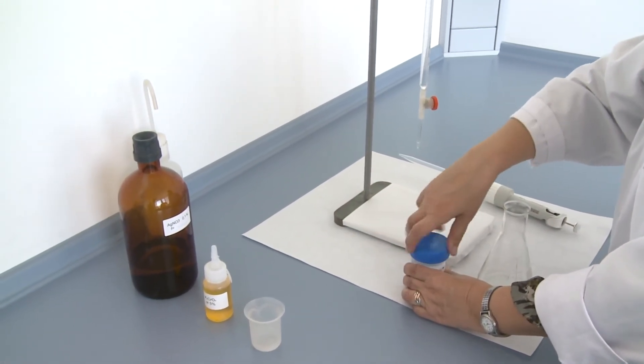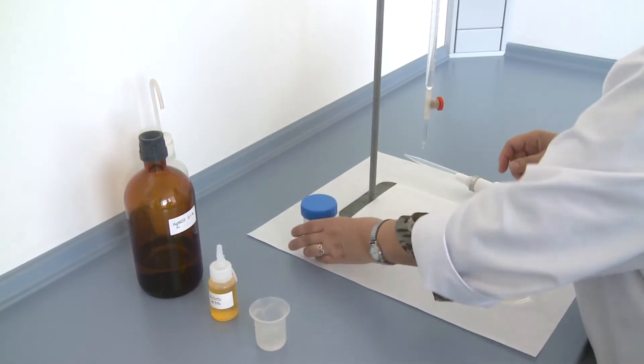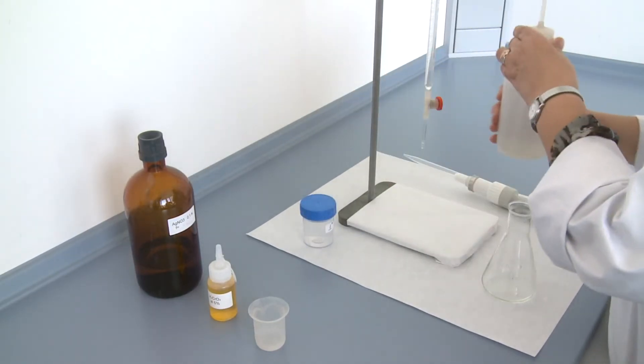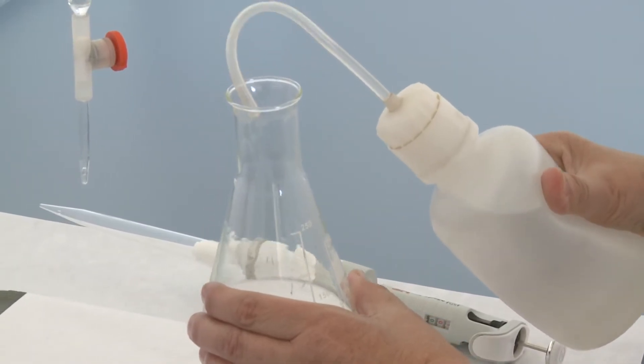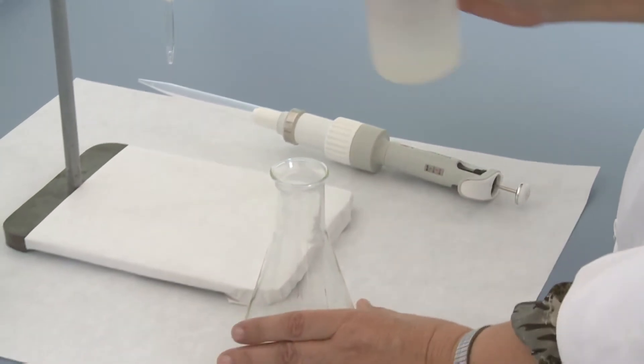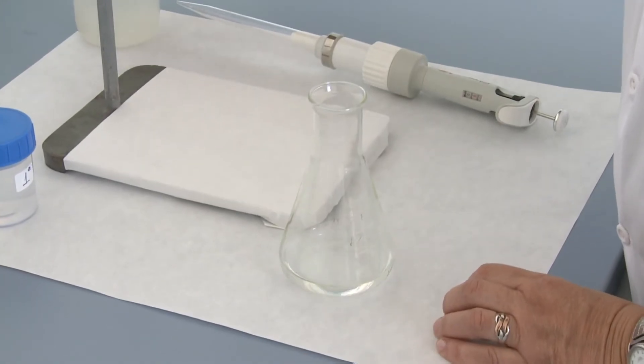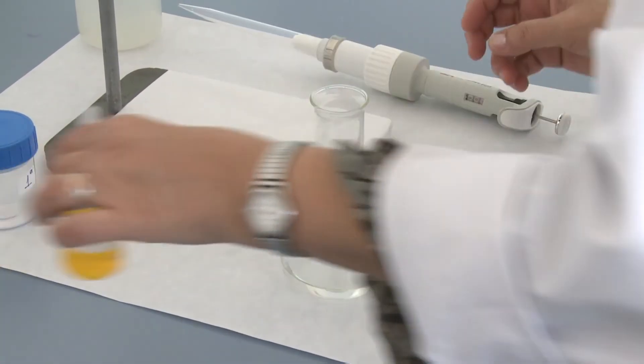Then add about 50 ml of distilled water to dilute it. Add 3 or 4 drops of the indicator potassium chromate to 5%.